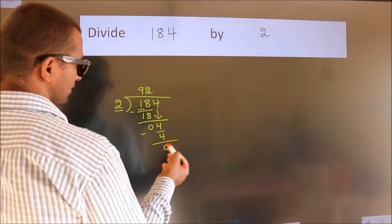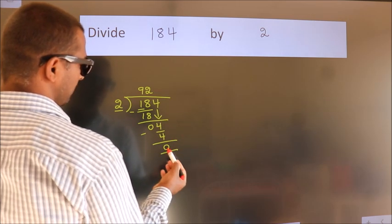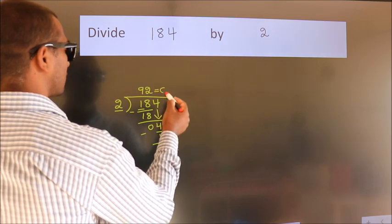After this, no more numbers to bring it down and we got remainder 0. So this is our quotient.